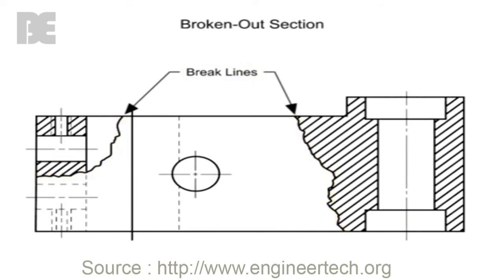Typically, hidden lines are omitted from the broken out section view. Additionally, the section is not shown in a separate view. Instead, the original part is drawn as normal and the section appears in the regular view.